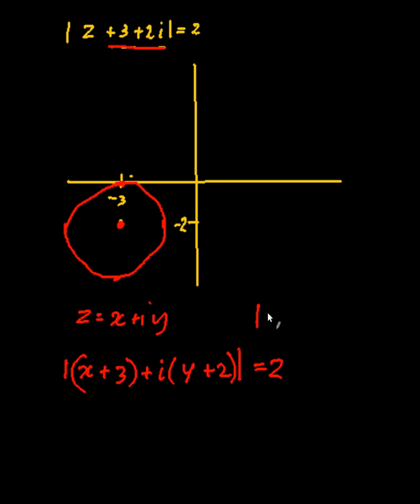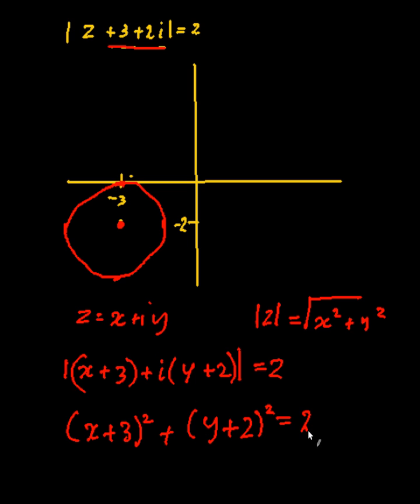So again, remembering the definition of a complex number, simply square root of the real and imaginary parts, you'll end up getting (x + 3)² plus (y + 2)². Now because it's square root, I'm going to square both sides instead, and it equals 2². Right, now this thing you should recognize is simply the equation of a circle.